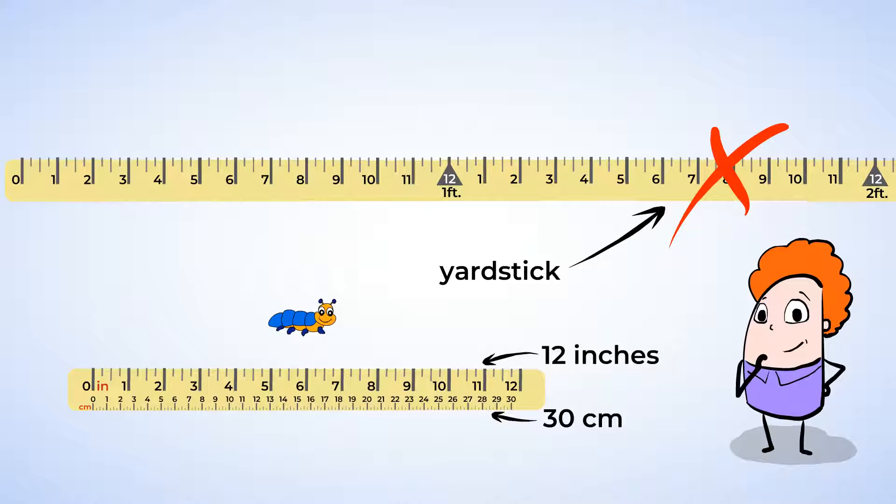It's much easier to use the ruler since it's closer in size to the caterpillar. Now, let's align the ruler with the end of the caterpillar and see how long it is. We're going to have to make sure we're all lined up before we get our answer. And the caterpillar is 2 inches long. Nice work.